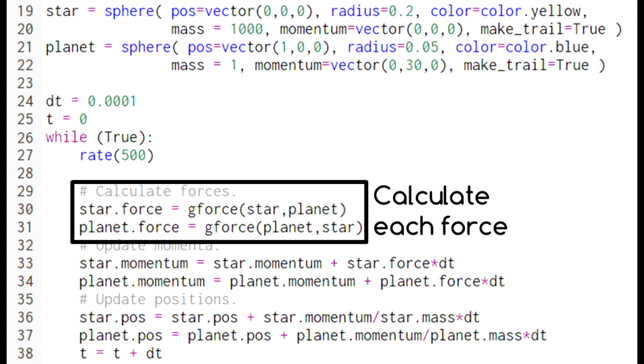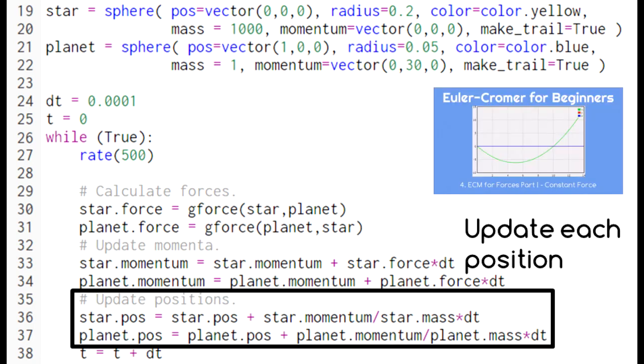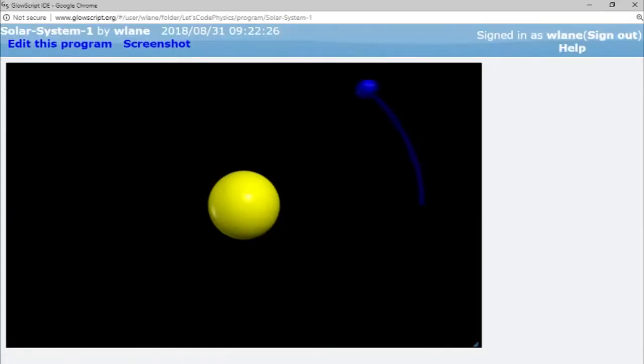First, we calculate the force on each object using our function. Then, we update their momenta. And then, we update their positions. For a review of the Euler-Cromer method, see the series linked in the description below.